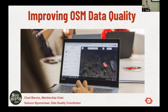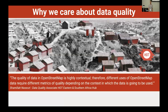We recently drafted a data strategy, so I'm going to walk through what that process looked like and some of the things we identified. Why do we care about data? Everyone here knows what the Humanitarian OpenStreetMap Team does, and reliable data is really important. The quality of data in OpenStreetMap is highly contextual, and therefore different uses require different metrics depending on the context and how it's going to be used. It might be good enough to just have road lines if you're responding to a disaster — you might not need all the surface types. Or it might be good just to know there's a cluster of buildings up in the mountains somewhere, but it doesn't necessarily mean you have to have every single building mapped. It just depends on how that data is being used.